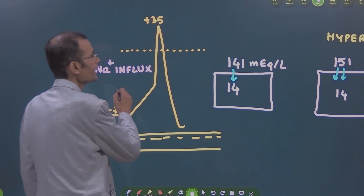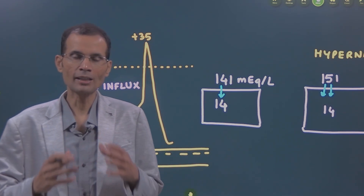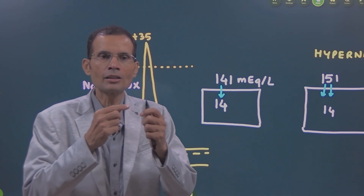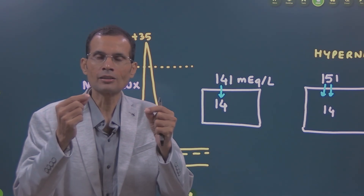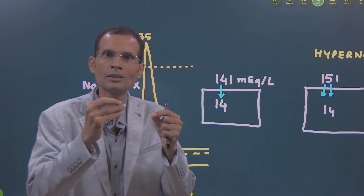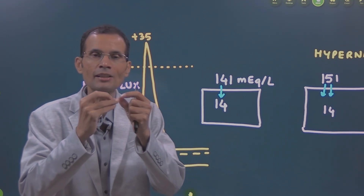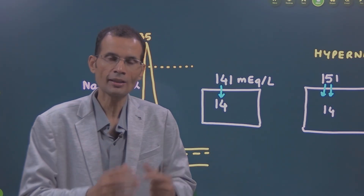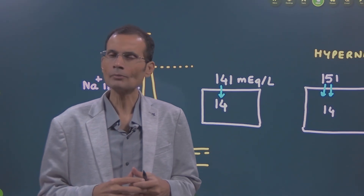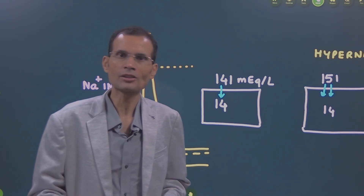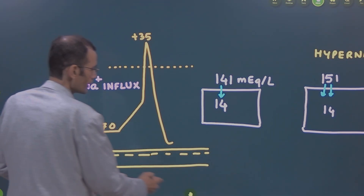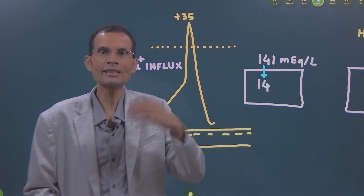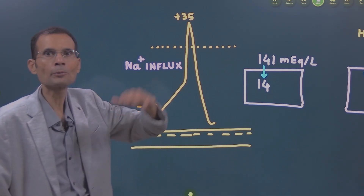I always like to give the example of a firecracker when I describe the action potential. Imagine a firecracker and there is a bati to the firecracker. Initially, the bati burns, burns, burns and when it reaches threshold, with one single burst, the cracker makes a loud noise — it bursts. Somewhat similar thing happens in the case of action potential: it reaches threshold and once it reaches threshold, with one single burst, there is a completion of depolarization.